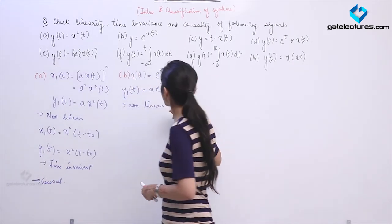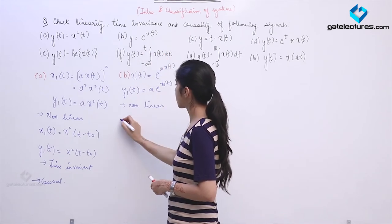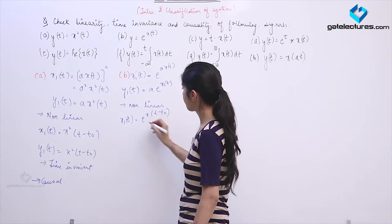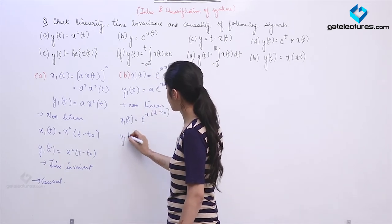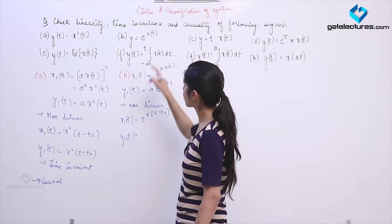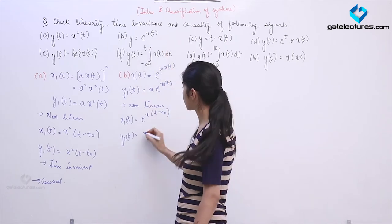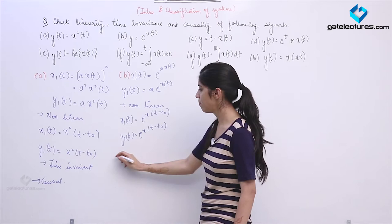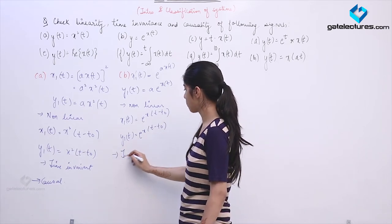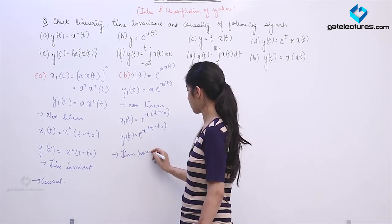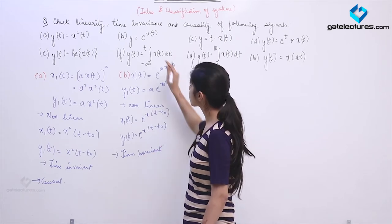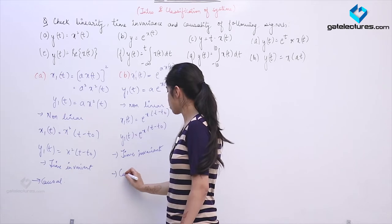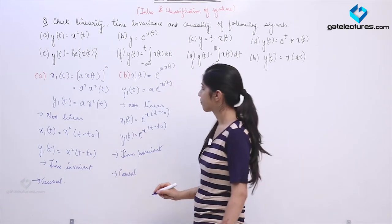To check time invariance: shifting the input gives e^(x(t − t₀)). Shifting the output — replacing the argument with t − t₀ — also gives e^(x(t − t₀)), which is the same. So this system is time invariant. Since it depends on present values of t only, it is also causal.